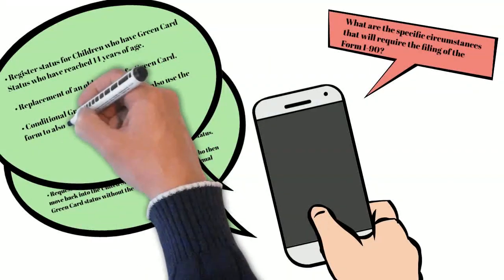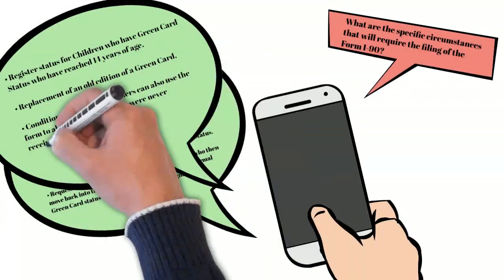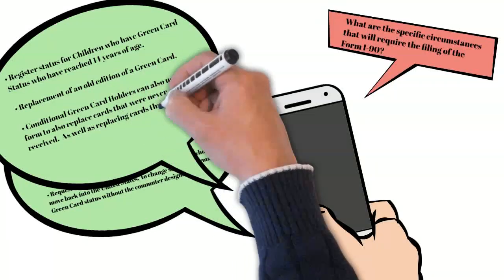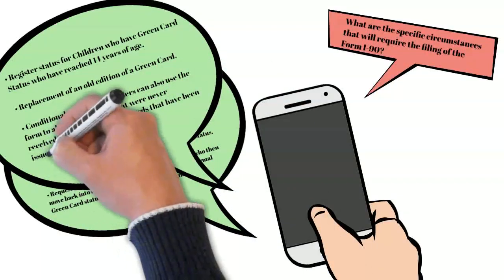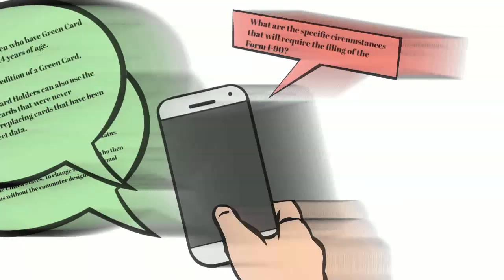Conditional green card holders can also use the form to replace cards that were never received, as well as replacing cards that have been issued with incorrect data.